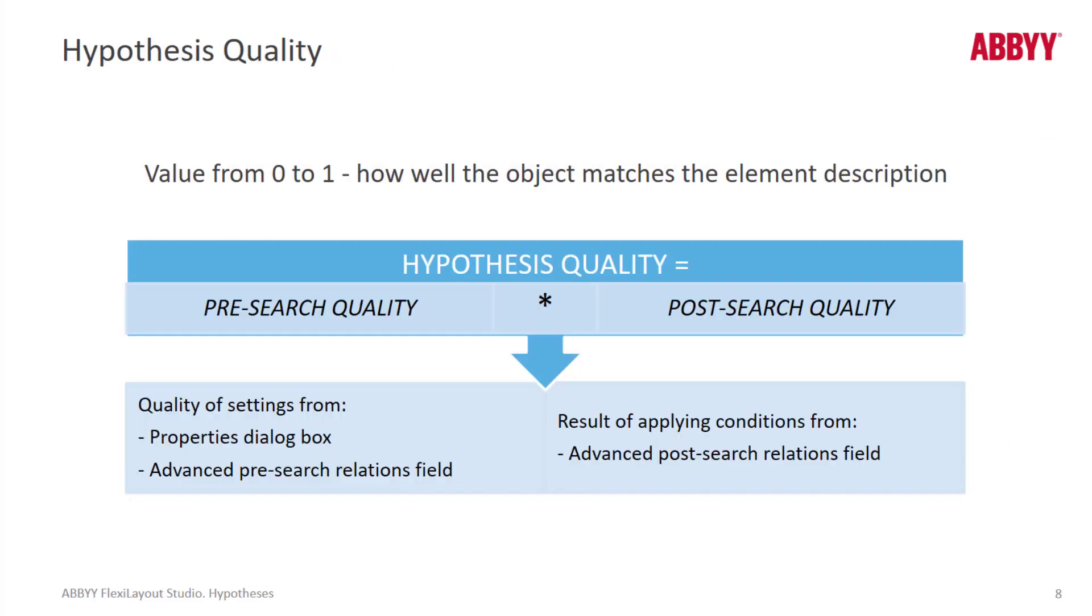As mentioned, a hypothesis quality can range from 0 to 1. The quality is a combination of pre-search quality and post-search quality. Pre-search quality can be affected by settings you make in the GUI tab, or your pre-search quality code, FlexiLayout language code. Post-search quality can be affected by post-search quality code.